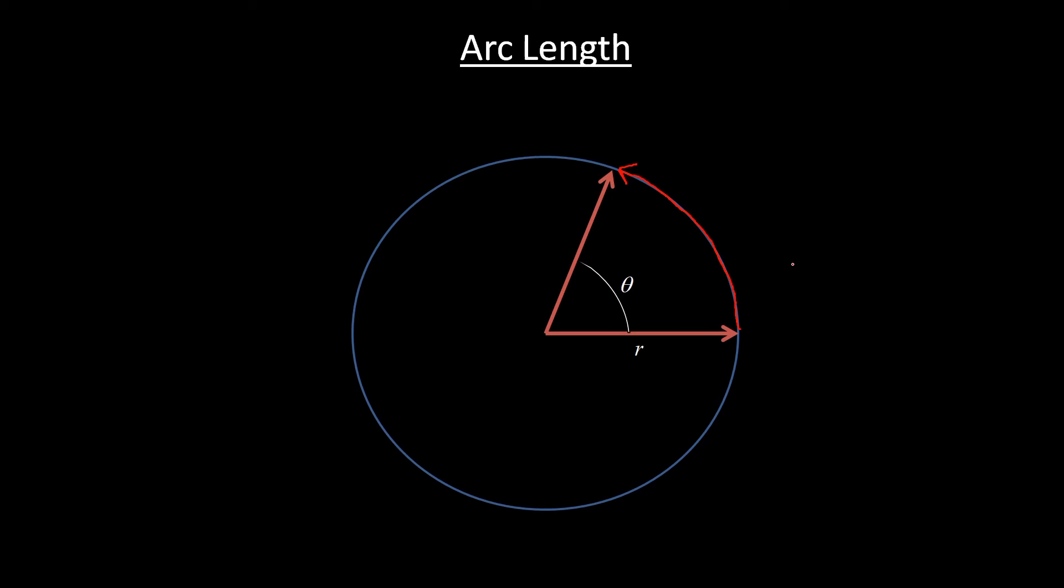We call that length s, and this length here turns out to be r times theta. So this arc length right here, we'll call it s, is the radius times your angle. Now the angle does have to be in radians. There's a couple word problems where you just use this formula to figure out arc length.